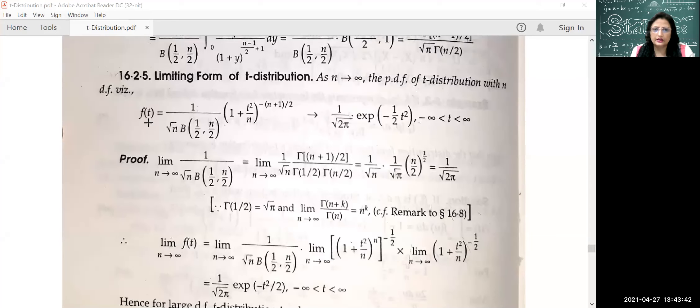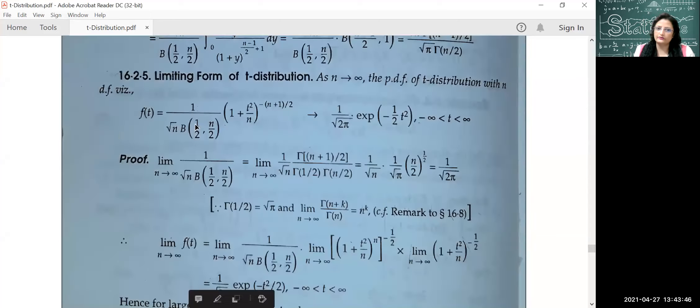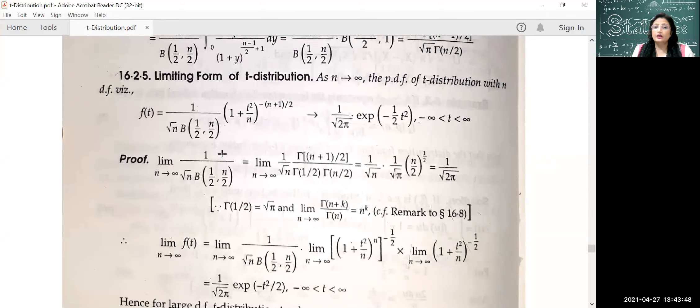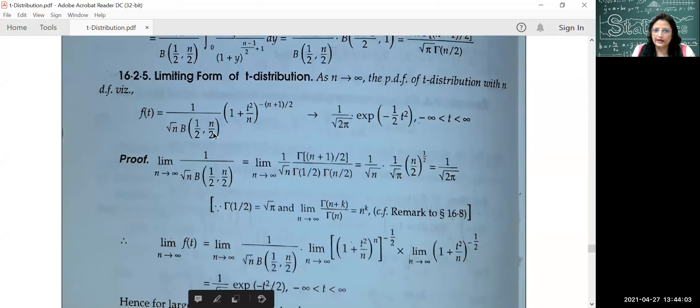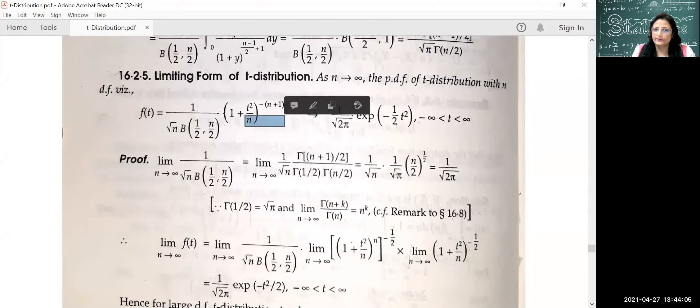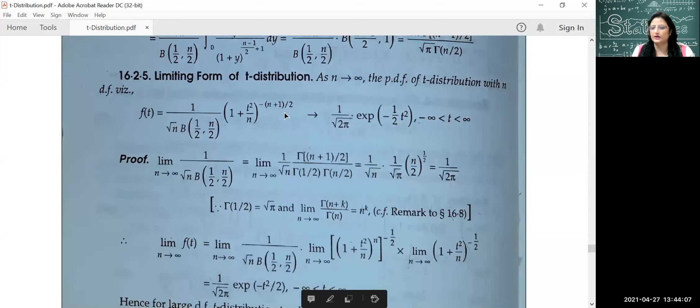First of all, you will write the PDF of t-distribution. What do we need to do? We will remove the limiting value. You have to write here: limit n tends to infinity. Before solving it, you have to put infinity - one has to put infinity, and one has to put infinity.